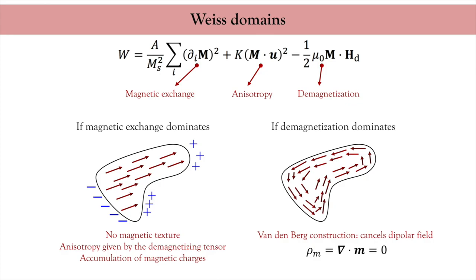Keep this construction in mind, because whenever this is possible — whenever the exchange is not too strong — the magnetization will always tend to minimize the dipolar coupling by adopting such a twisted configuration. The very complex distribution of the magnetization displays lines of abrupt change of direction.